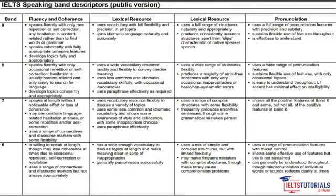There are four criteria for achieving good bands in speaking: Number one is fluency and coherence, number two is lexical resource, number three is grammatical range and accuracy, and number four is pronunciation. Understanding the importance of these four things will help you get good scores.